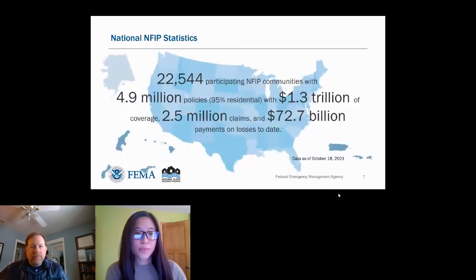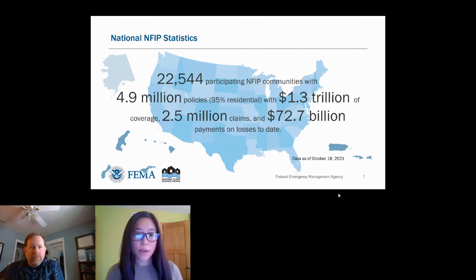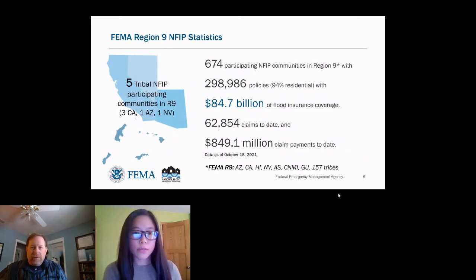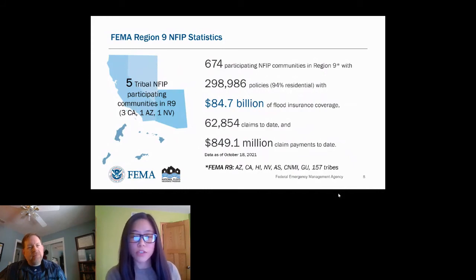With a flood insurance policy, your home is covered even if a disaster is not declared, so people can recover more quickly. The average FEMA Region 9 Individuals and Households Program award was just over $2,000, versus the average NFIP flood insurance claim payment of just over $25,000. There are currently over 22,000 communities in the U.S. that participate in the NFIP, of which 674 NFIP communities are in FEMA Region 9 — spanning Arizona, California, Hawaii, Nevada, American Samoa, CNMI, Guam, and 157 tribes.